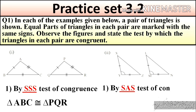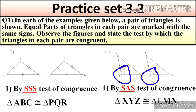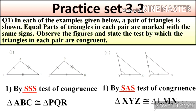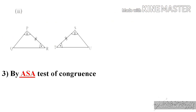In the second figure, with identical marking, XY is congruent to side LM, angle Y is congruent to angle M, and side YZ is congruent to side MN. So by Side Angle Side test of congruence, triangle XYZ is congruent to triangle LMN.